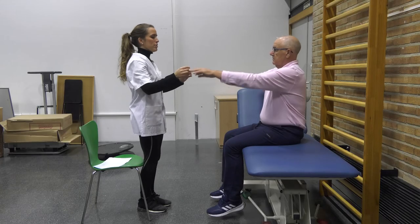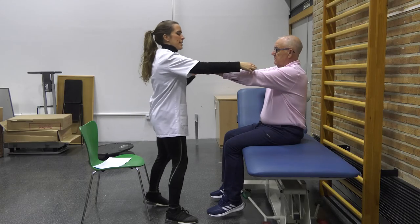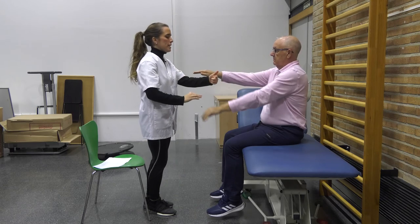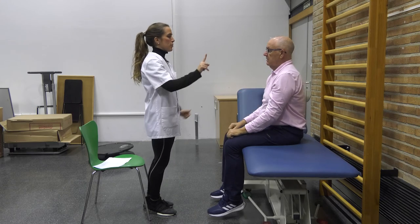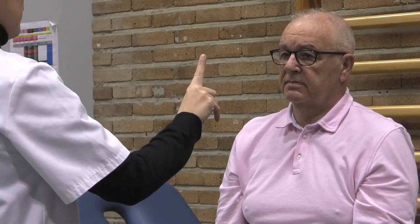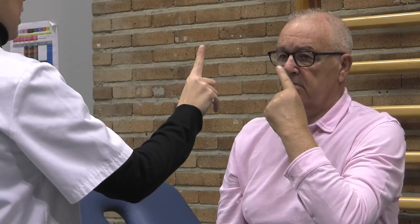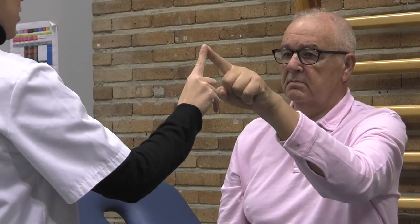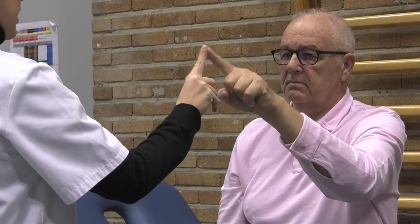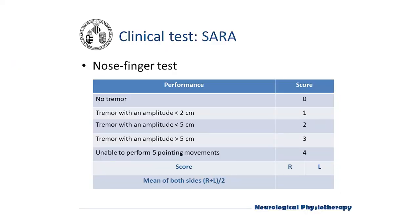The patient is asked to point repeatedly with the index finger from his or her nose to the examiner's finger, which is positioned in front of the patient at about 90% of the patient's reach. Movements are performed at moderate speed and performance is rated according to the amplitude of the kinetic tremor.